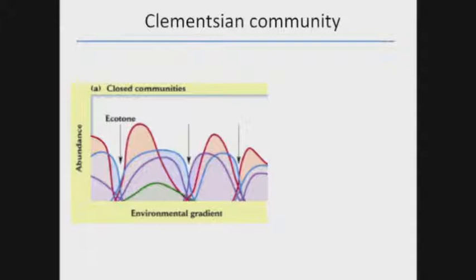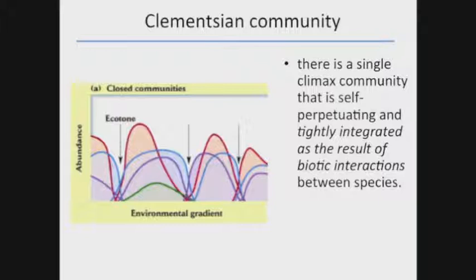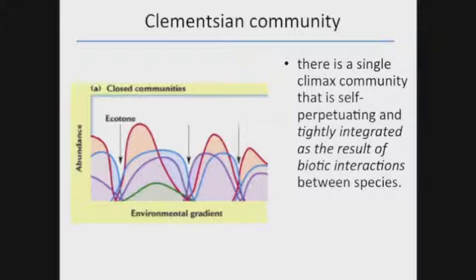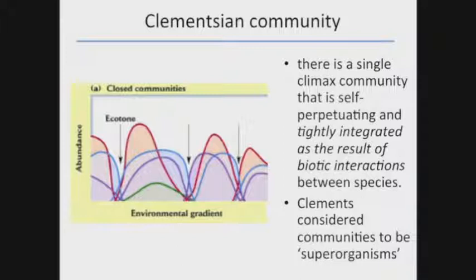The Clementsian community is very different — a very closed community. There's a single climax community, organisms are tightly integrated, and there's a lot of biotic interaction. Where you get breaks in ecotones, you tend to get a similar distribution of species over the entire ecotone, then a break, then another set of species. Community structure within habitats is meant to be fairly persistent in space and time because of this biotic interaction. Clements even referred to these communities as superorganisms.